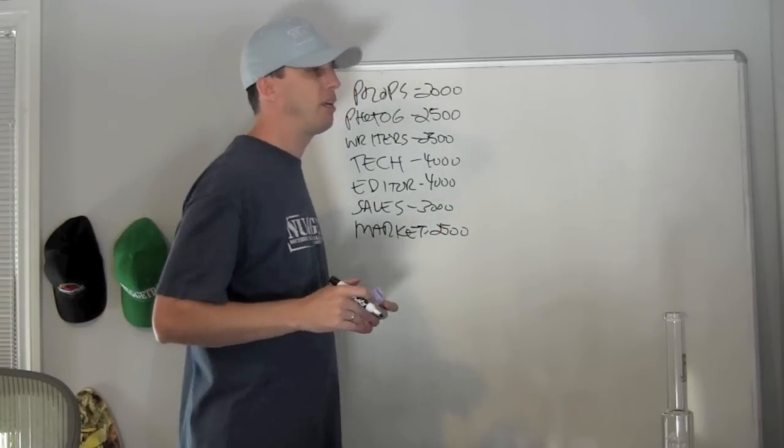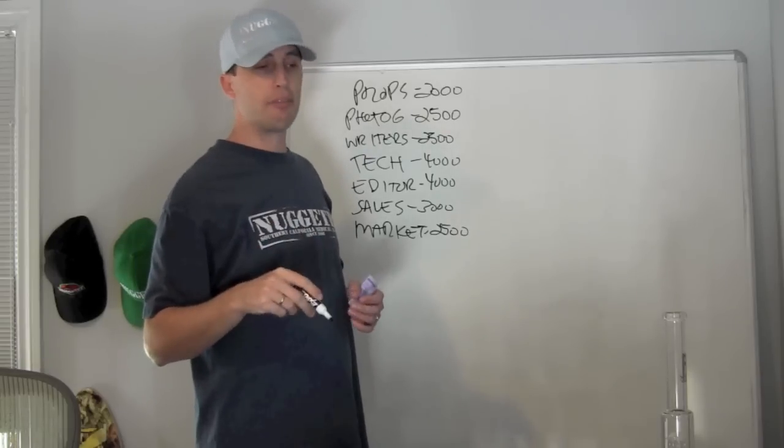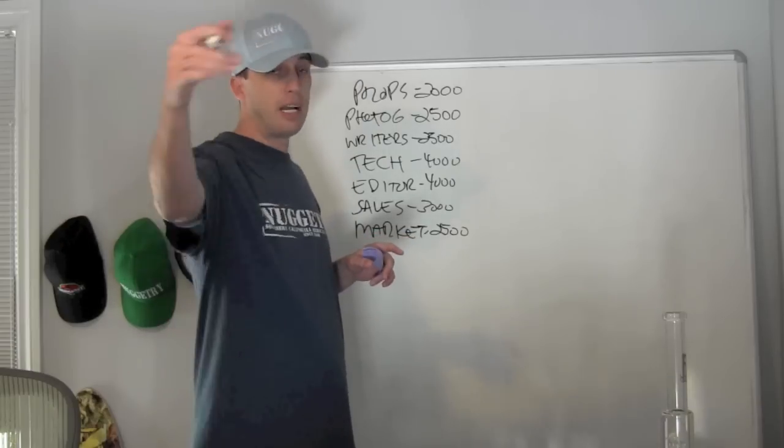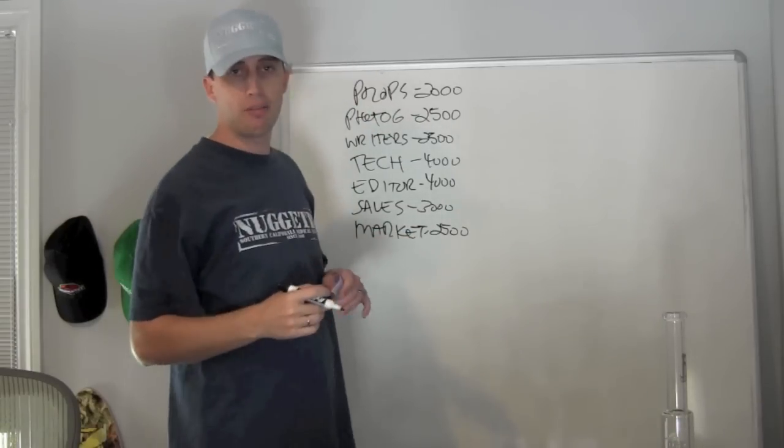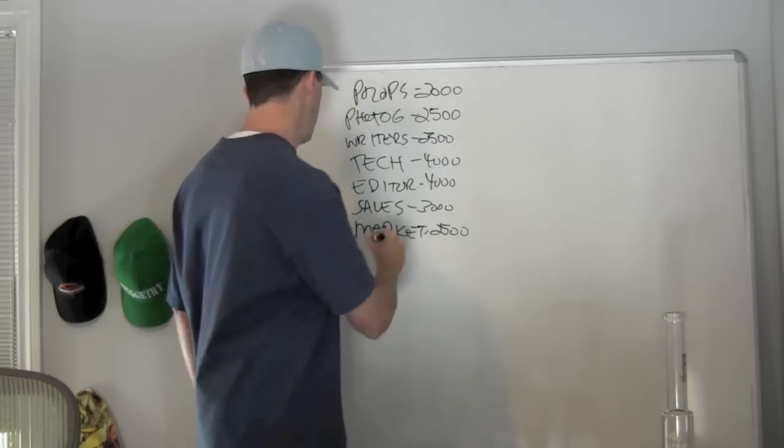Distribution, in order to get the magazine from the printer to the shops where it's sold, that costs money, it's not free. If we print in California, we have to get it out to Colorado. If we print in Colorado, we have to get some of that run out to California because those are our two main markets right now. Distribution, we spend another three grand.